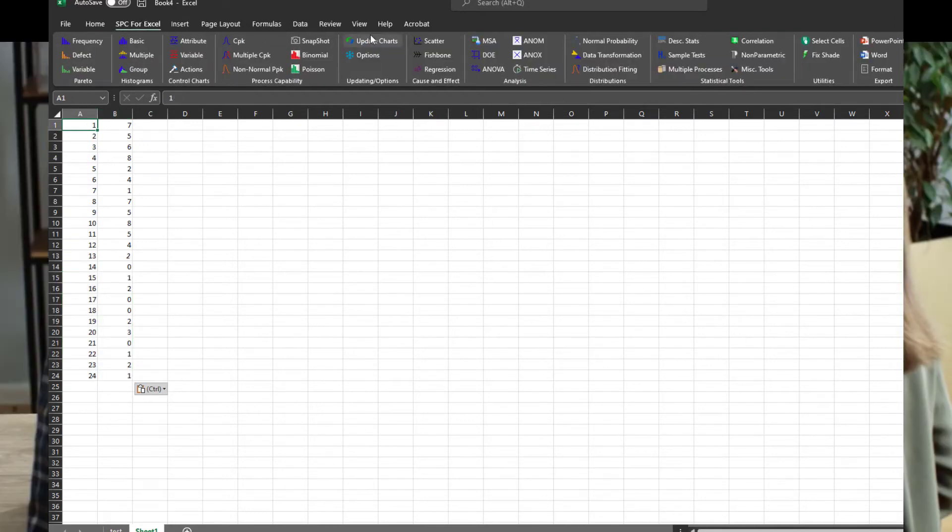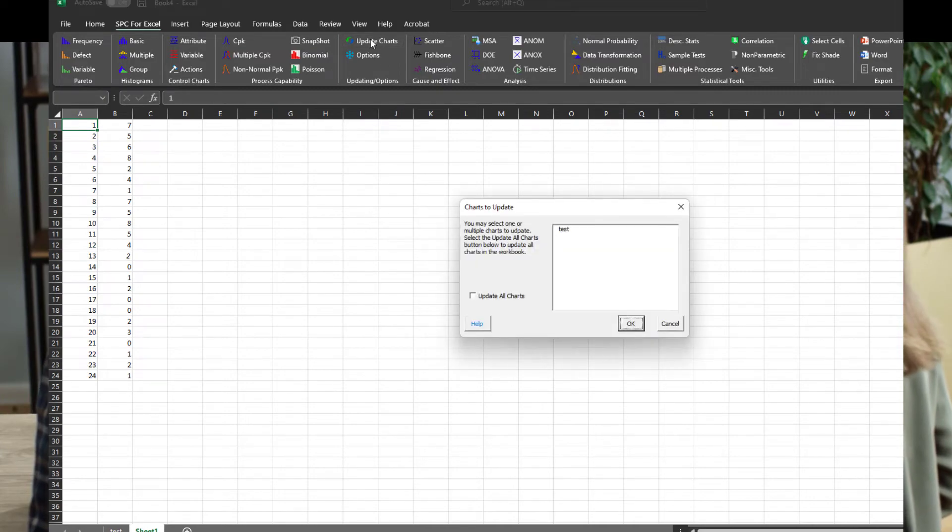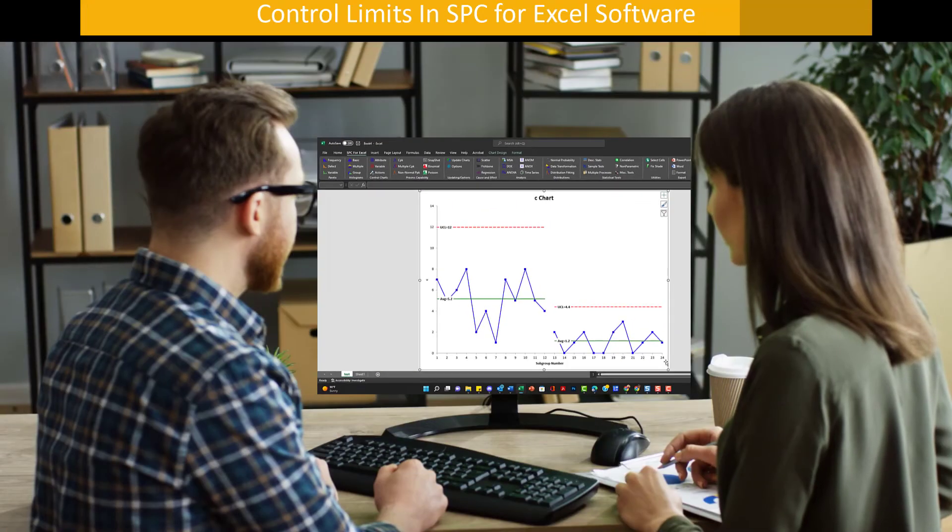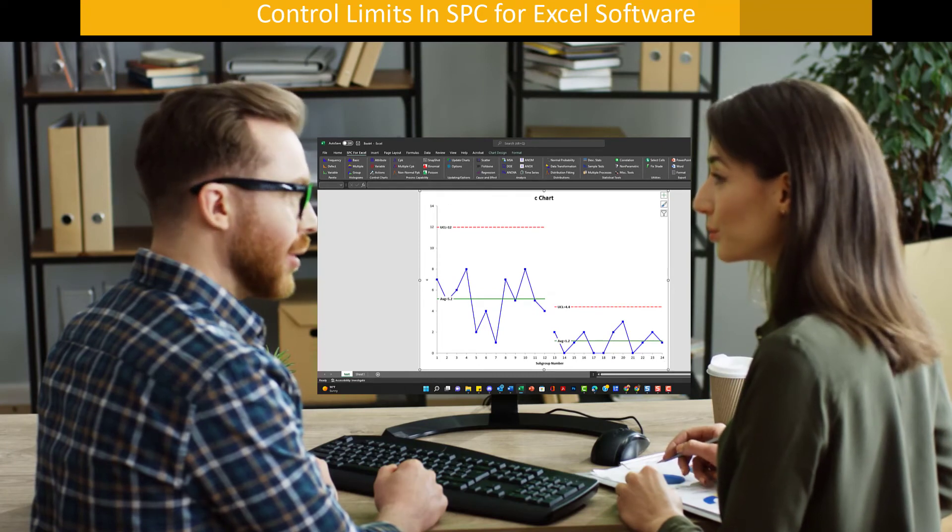Now let's enter the rest of that data for the next year where you had the improvement. You just simply enter that data into your Excel spreadsheet. Select options. You're going to update the test chart. Select that. And you have your C chart now with the limits split. So you have your baseline data, which runs 1 through 12 with an average of 5.2, and you have your improved process with an average of 1.2. That's how easy it is to split the limits in the SPC for Excel software.